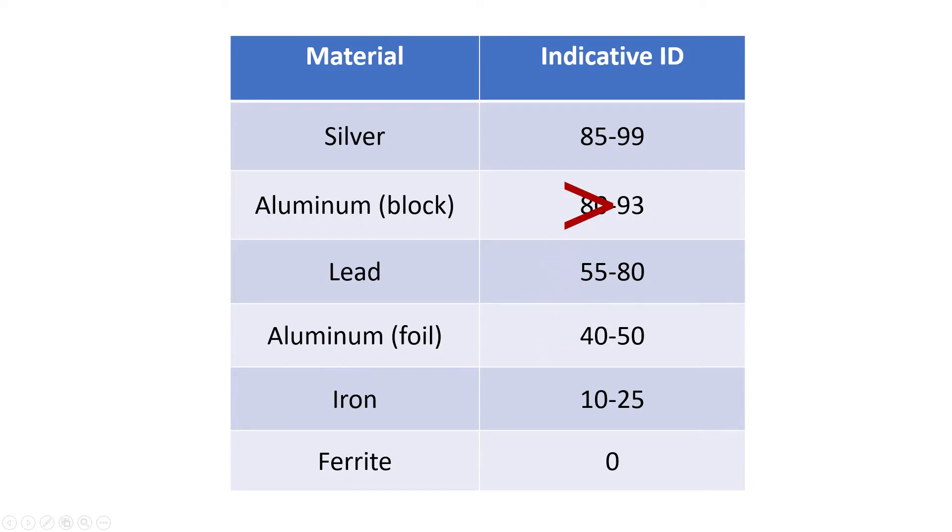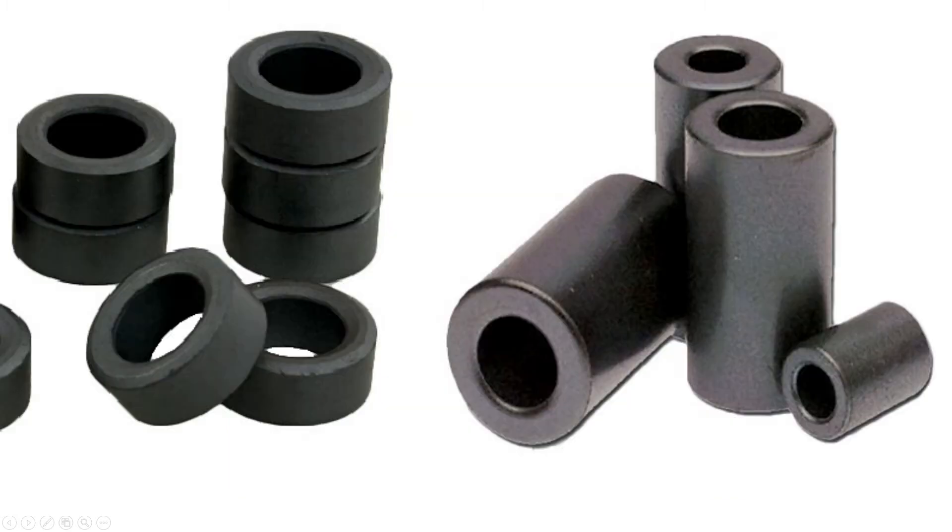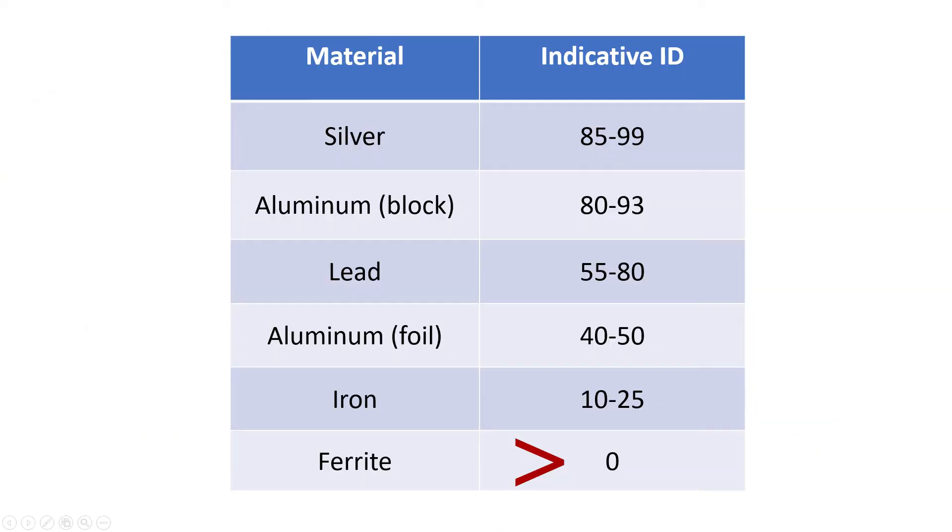Now if you look at the metal lead for example, you see that it generally shows an ID of between 55 and 80. This value is also dependent on the thickness and the size. Iron on the other hand has an ID value generally around 10 to 25, so way lower. And as a special material I added ferrite to this table. Ferrite is actually something that you will generally not find in practice. And it's special in the sense that it has magnetic properties, but it's completely non-conductive. So ferrite generally gives back an ID of around 0.